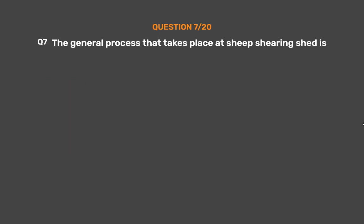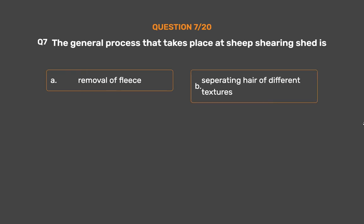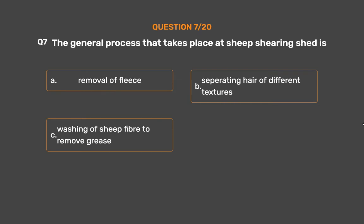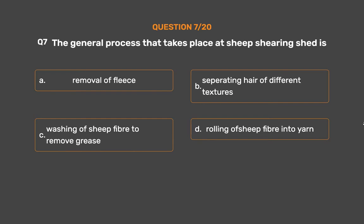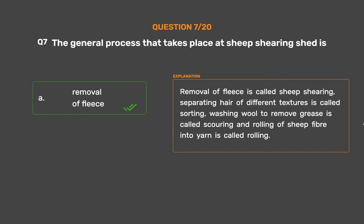Question No. 7. The general process that takes place at a sheep shearing shed is — Option A: Removal of fleece, Option B: Separating hair of different textures, Option C: Washing of sheep fiber to remove grease, Option D: Rolling off sheep fiber into yarn. The correct answer is Option A: Removal of fleece. Removal of fleece is called sheep shearing. Separating hair of different textures is called sorting. Washing wool to remove grease is called scouring, and rolling off sheep fiber into yarn is called rolling.